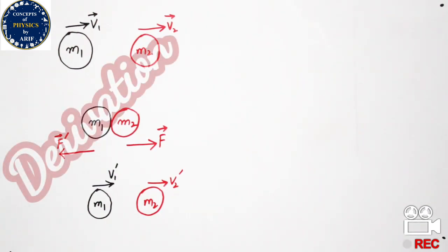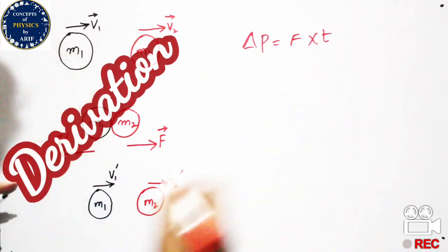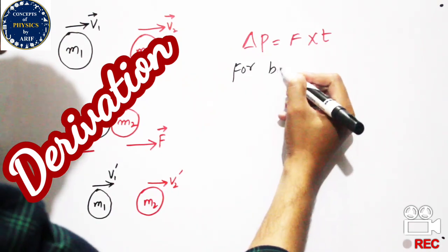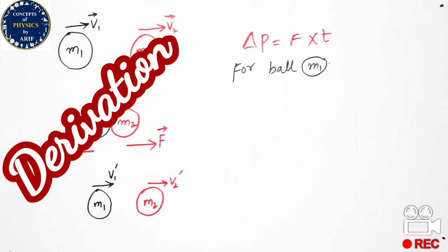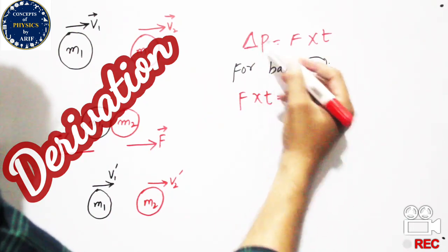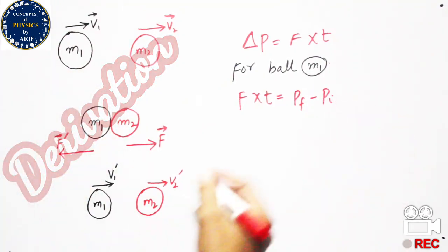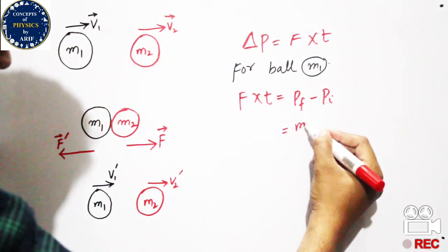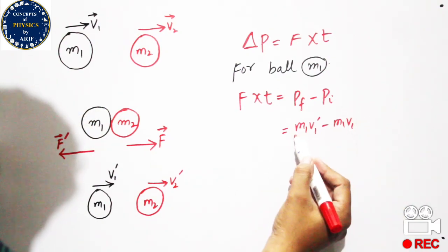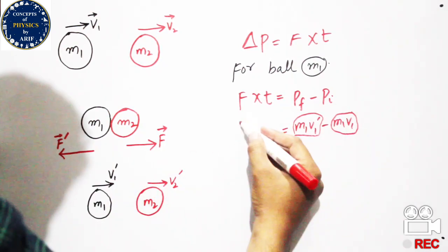We know the expression for change in momentum: delta p is equal to F cross t. Let us solve this expression for ball 1, which has mass m1. The expression becomes: F cross t equals final momentum minus initial momentum, which is m1 v1 prime minus m1 v1, where m1 v1 prime is after collision and m1 v1 is before collision.